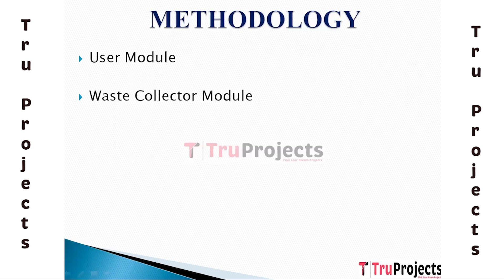The first is the User Module, which is the interface through which users interact with the waste management system. This could be a mobile app or a web application that allows users to report instances of waste, track the reported waste, and receive updates on the status of waste collection. Users might also use this module to set preferences for alerts and track waste-related activities.